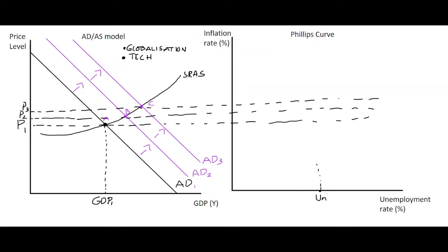This would represent the first point on our Phillips curve, point A, corresponding to equilibrium A. The increase in GDP following the aggregate demand side change has brought GDP up to GDP2. That will cause an increase in employment and reduce unemployment rates, which means the unemployment rate reduces, and we come up to our new price level at point B.